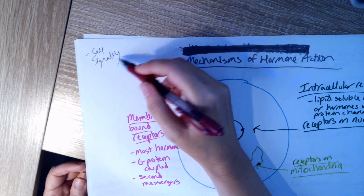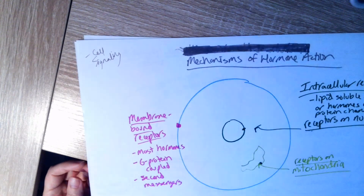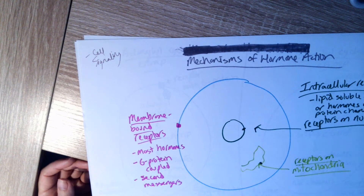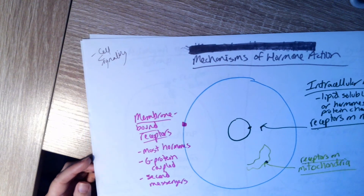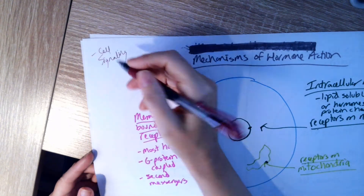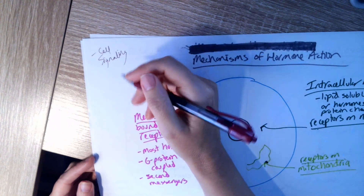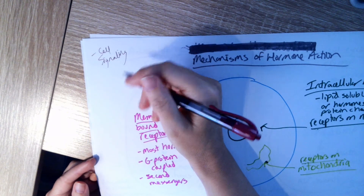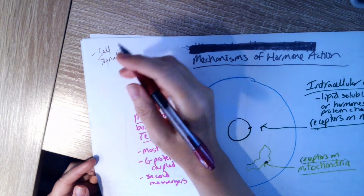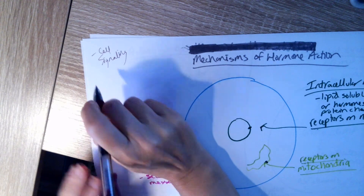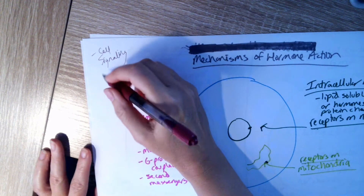So it's a slower form of cell signaling than what we saw with the nervous system, because it involves hormones and they have to get into the blood and travel through the blood and all that sort of thing.